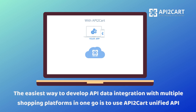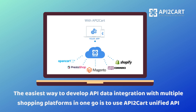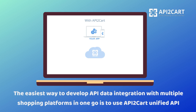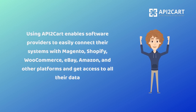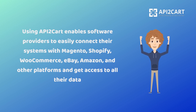The easiest way to develop API data integration with multiple shopping platforms in one go is to use API2Cart Unified API. Using API2Cart enables software providers to easily connect their systems with Magento, Shopify, WooCommerce, eBay, Amazon, and other platforms, and get access to all their data.